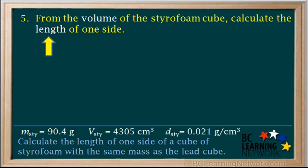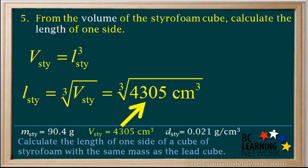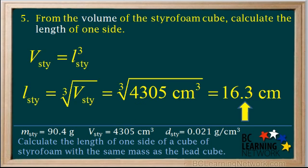Now that we know the volume of the cube, we can calculate the length of one side. Remember, the formula for volume is V equals L cubed. To solve for L, we take the cube root of both sides of the equation. So the length of one side L equals the cube root of the volume V, which is the cube root of 4,305 centimeters cubed, and rounded to three significant figures comes out to 16.3 centimeters.